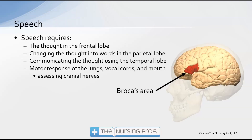The next step is speech. Speech requires many different parts of the brain. First, the thought is processed in the frontal lobe; we convert that thought into words in the parietal lobe, communicating it into the temporal lobe. Broca's area is responsible for communication and helps with the motor response needed from the lungs, vocal cords, and mouth in order to speak.